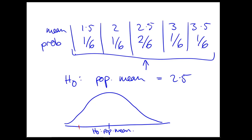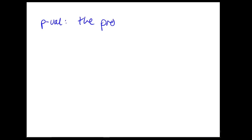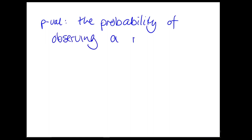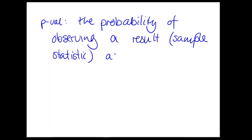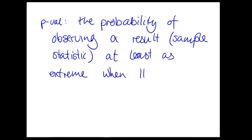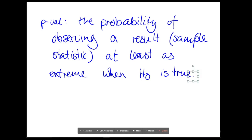This is very much the cut-down version — it gets messy very fast. So I'm going to give you a technical definition here, and then because it's pretty much word salad, we're going to talk about it. A p-value is the probability of observing a result — which means a sample statistic — at least as extreme, when the null hypothesis is true.